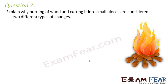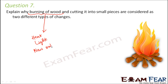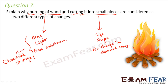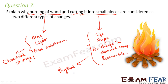Explain why burning of wood and cutting it into small pieces are considered two different types of changes. Burning of wood: heat is released, light is released, and new substances like carbon dioxide and ashes are formed — this is a chemical change. Cutting wood into small pieces: size and shape change, but the chemical composition does not change. The small pieces can even be joined together to form a bigger piece, so it is reversible — making it a physical change.